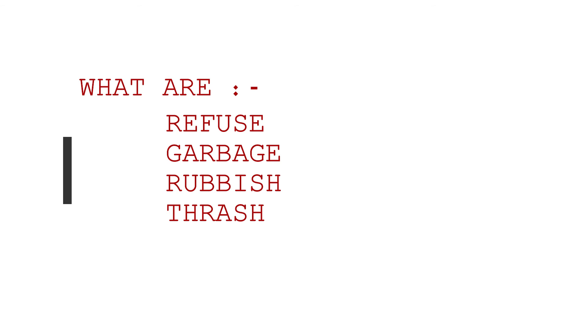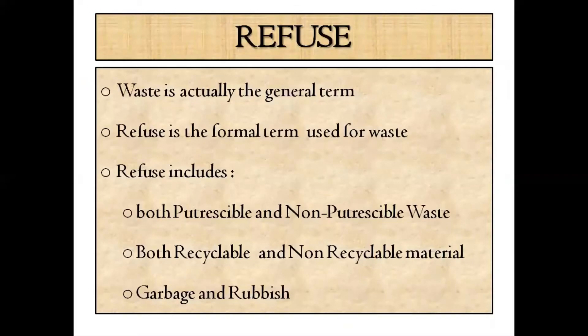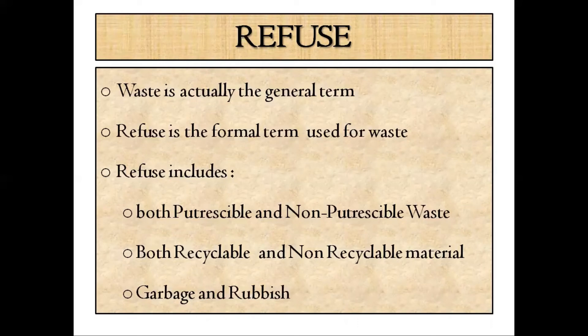After defining and understanding the different types of municipal solid waste terminology, it is now easier to understand the meaning of refuse, rubbish, trash, and garbage. Refuse is actually a synonym for waste — it is a more formal term used for waste, and when you say refuse it includes all municipal solid waste. Refuse will include both perishable and non-perishable waste as well as recyclable and non-recyclable material, and therefore refuse will include both garbage and rubbish.